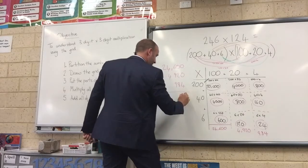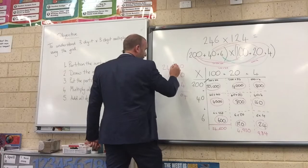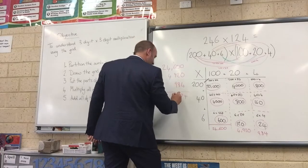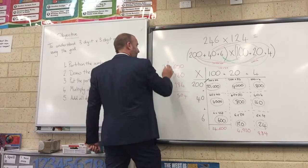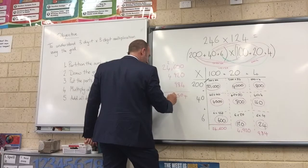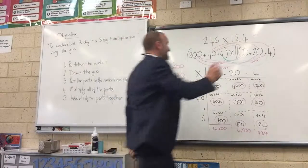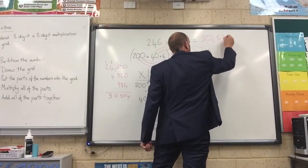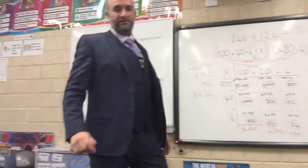Adding those together: 4 plus 0 is 4; 8 plus 2 is 10, so write 0 and carry the 1; 1 plus 6 plus 9 plus 9 is 25, so write 5 and carry the 2; 4 plus 4 plus 2 is 10, so write 0 and carry the 1; and 1 plus 2 is 3. Our answer is 30,504. You can check on a calculator — well done if you followed those steps, that's quite advanced mathematics!